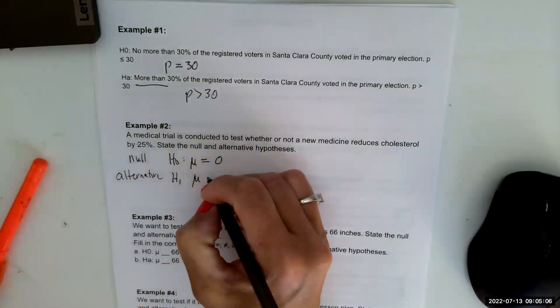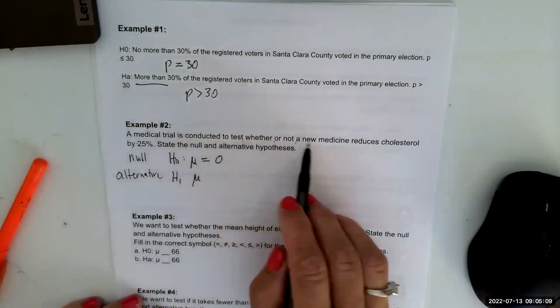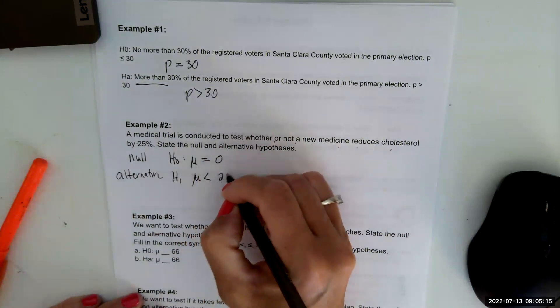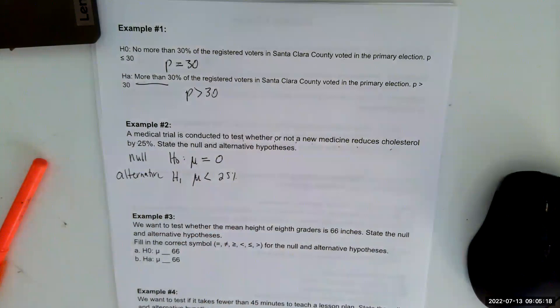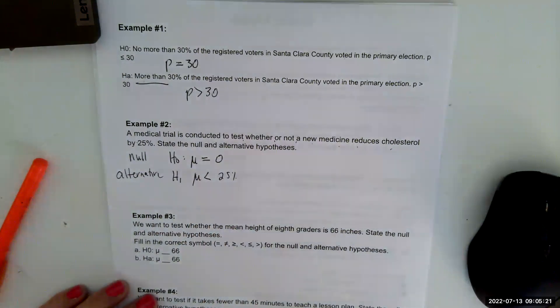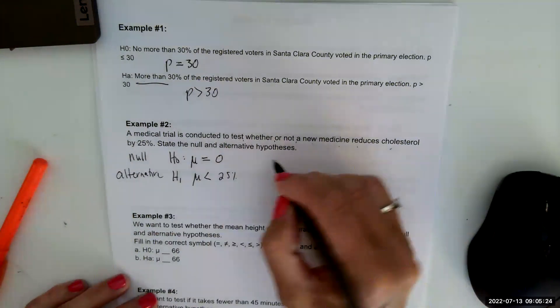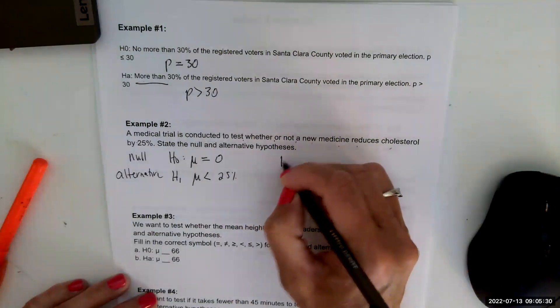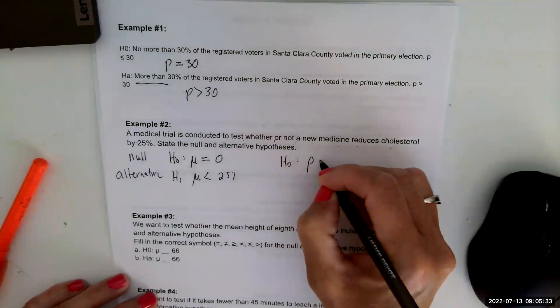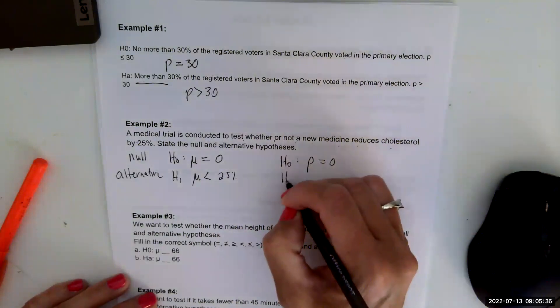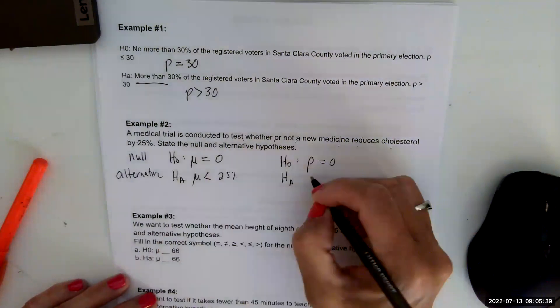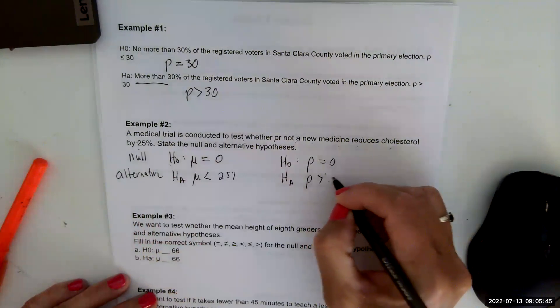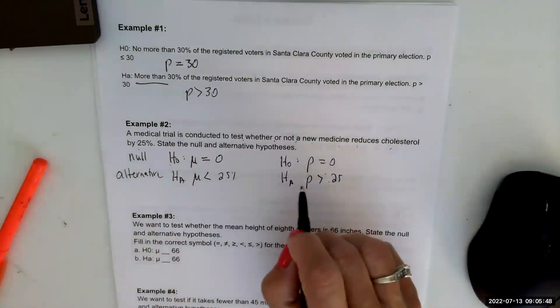It says a medical trial is conducted to test whether or not a new medicine reduces, so the difference is less than 25 percent. On this one because they talk about percentages, if it's not the measurement of the cholesterol and it's just a percentage of cholesterol, it really could be considering a proportion is equal to zero, the proportion difference, or the alternative proportion is greater than 0.25 so that they reduced it by 25 percent or more.